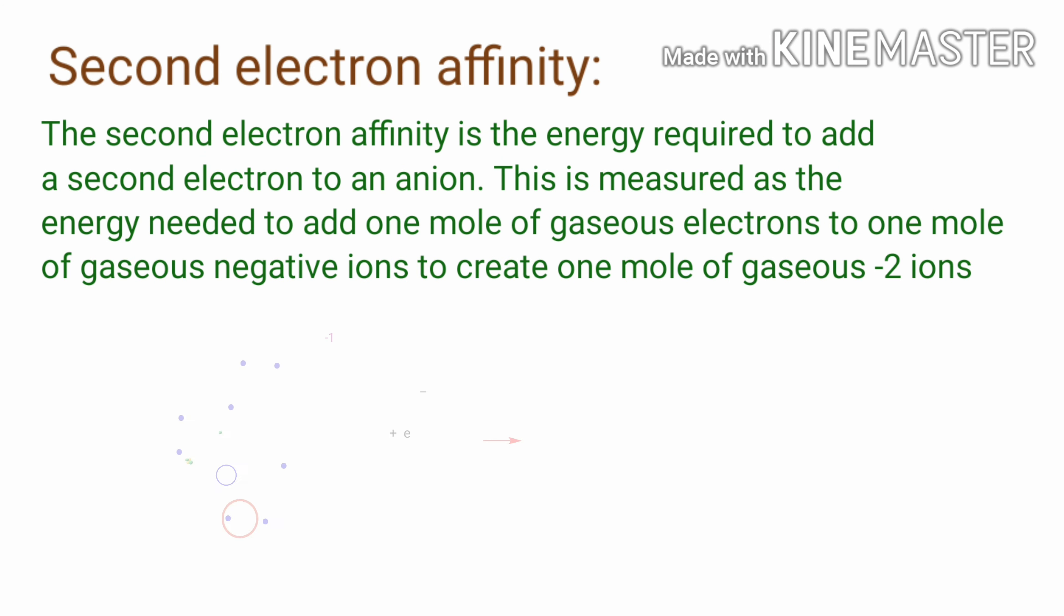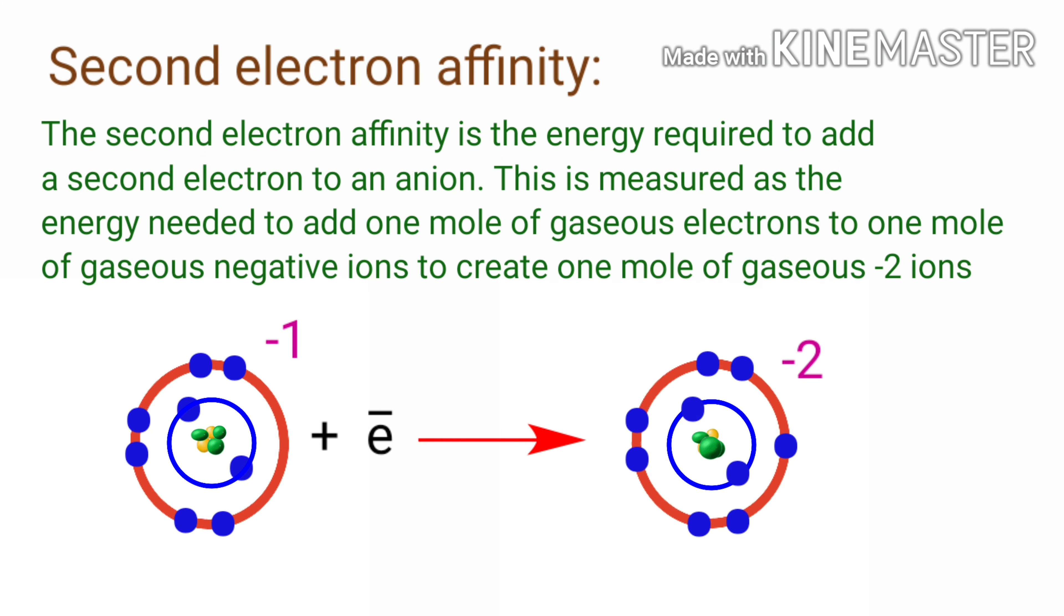Second Electron Affinity. The second electron affinity is the energy required to add a second electron to an anion. This is measured as the energy needed to add one mole of gaseous electrons to one mole of gaseous negative ions to create one mole of gaseous minus two ions.